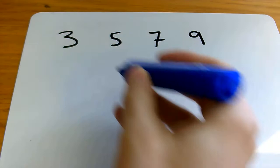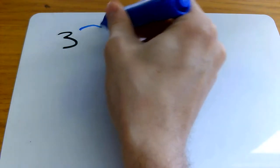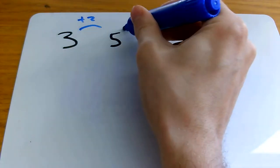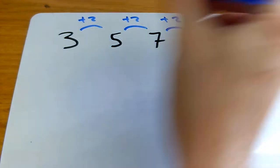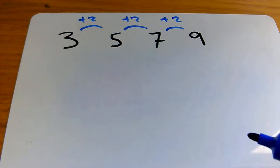Every time we go to the next number, we are adding 2. So this would be called the term-to-term rule for the sequence.